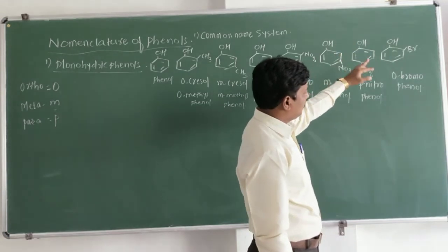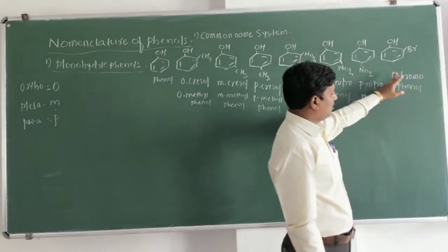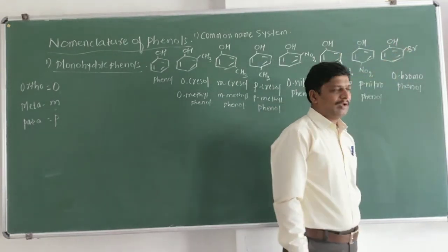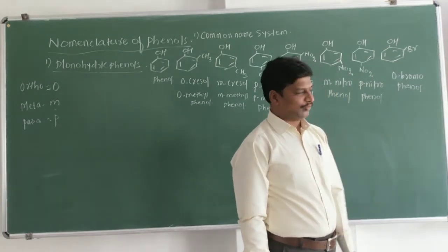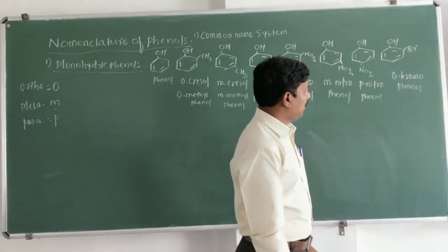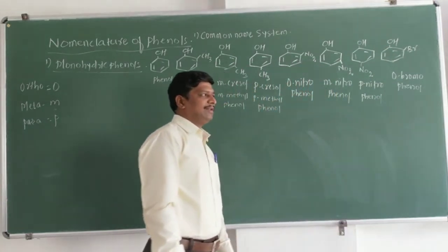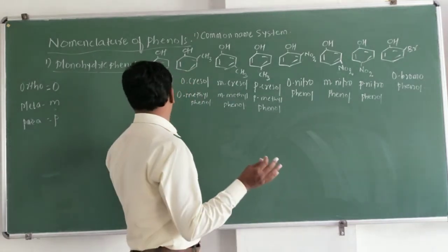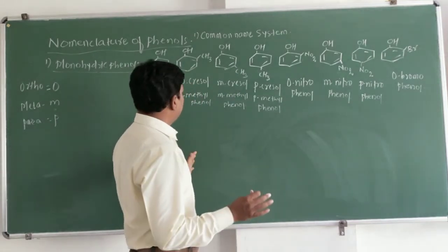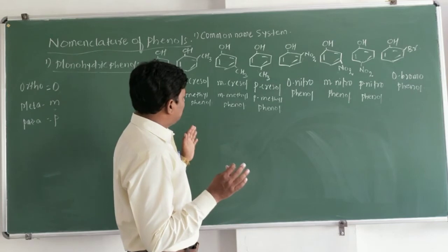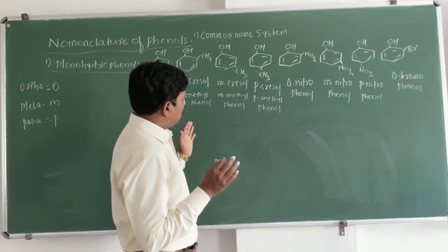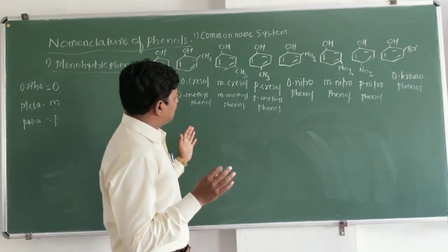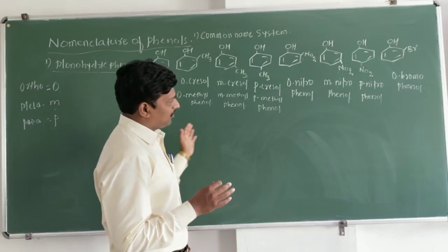The last structure is ortho-bromophenol because the two substituents are present in the adjacent position. So in this way you can derive lots of examples of monohydric phenols using their common names as well as IUPAC names.